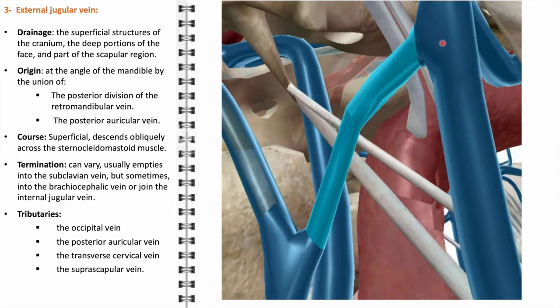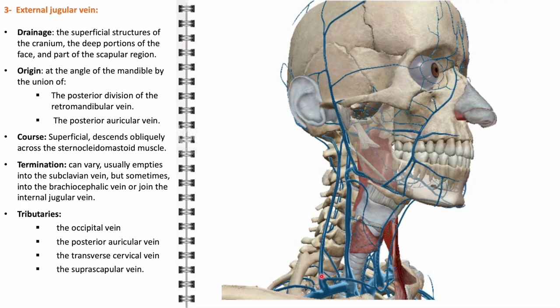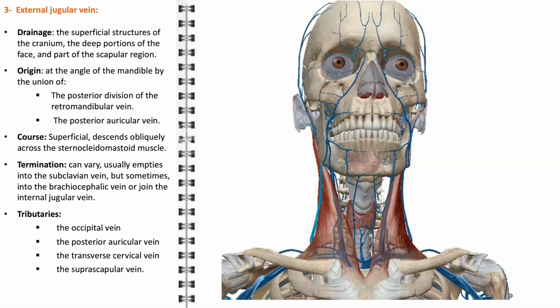The termination of the external jugular vein can vary among individuals; typically it empties into the subclavian vein, but in some cases it may drain into the brachiocephalic vein or join the internal jugular vein. The vein receives several important tributaries, each contributing to its drainage capacity: the occipital vein, draining the posterior scalp; the posterior auricular vein, serving the area behind the ear; the transverse cervical vein, draining parts of the neck; and the suprascapular vein, draining the scapular region. Together, these tributaries ensure comprehensive venous drainage from the upper back and lateral aspects of the head and neck.